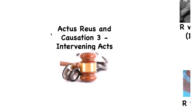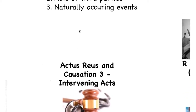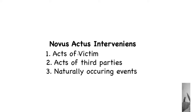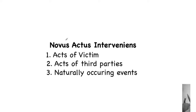Let's take a look at the third of our causation videos, surrounding intervening acts. We've already looked at the first two: the but-for test, the factual test, and legal causation. What we're now going to look at is the third element that can break the chain of causation, which is the intervening act. I'll start by moving directly to look at our three different types.